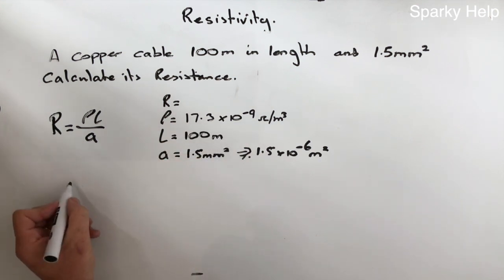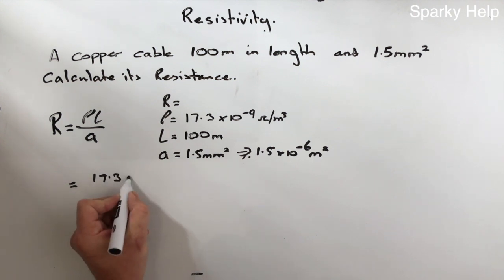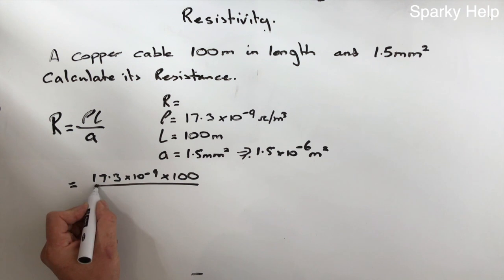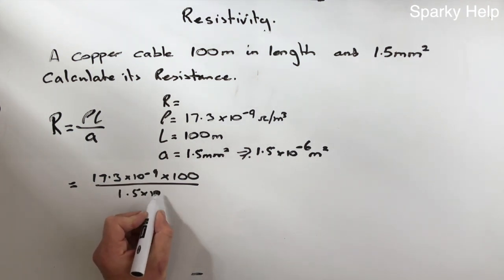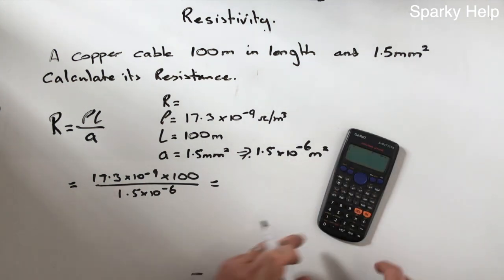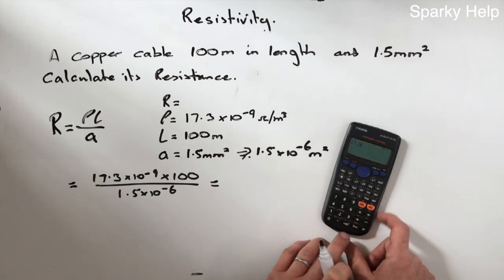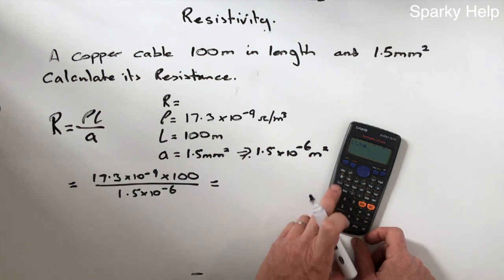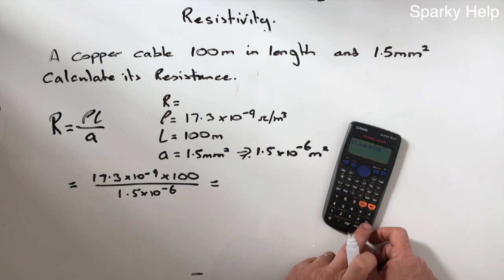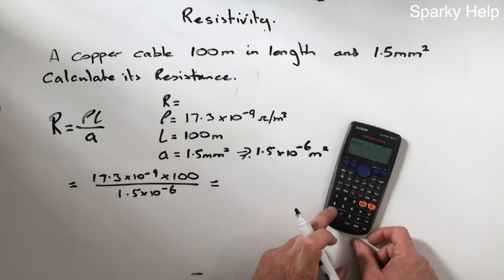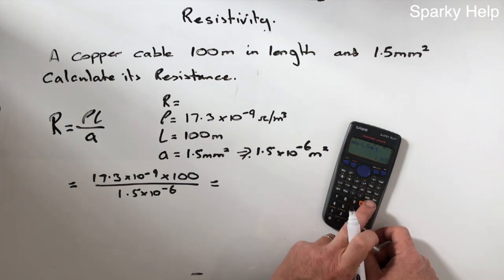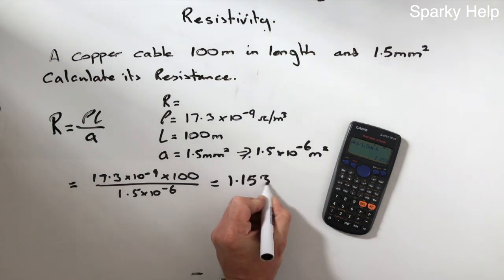So this is what we need to convert it to. Once we know these figures, we can now put them in over here. So rho, which is 17.3 times 10 to the minus 9, so it's a very small number. Multiplied by the length, which is 100. And then we divide that by this figure here, 1.5 times 10 to the minus 6. So in our calculator, remember 17.3, and we're going to use this button here, times 10 to the power of minus 9 times 100. As the top line comes to that, we're going to divide that number by 1.5 times 10 to the minus 6. And we get 1.153 ohms.